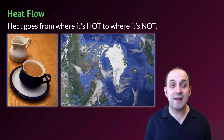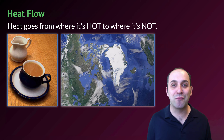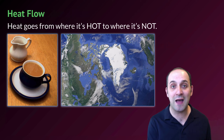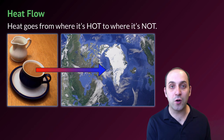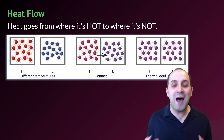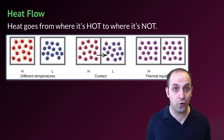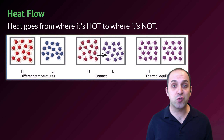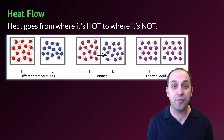Heat will always go from where it's hot to where it's not. To use our tea and arctic ocean example, if we were to put them in contact with each other, heat would go from the hot tea to the arctic ocean. If we represent this as a particle diagram, the hotter substance has a higher average kinetic energy, and when put in contact with the colder substance, energy is transferred from the higher average kinetic energy to the lower until everything reaches the same average kinetic energy — what we call thermal equilibrium.